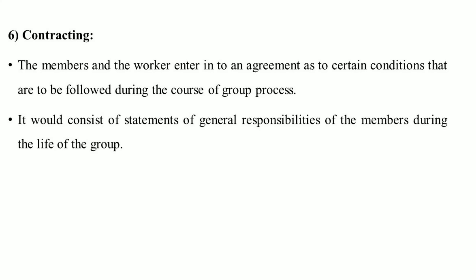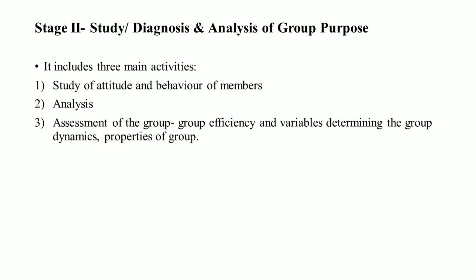The last step of stage one is contracting. The members and worker enter into an agreement regarding certain conditions to be followed during the course of the group process. This consists of a statement of general responsibilities of members during the life of the group.